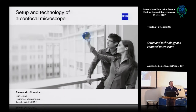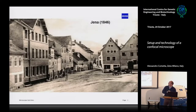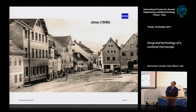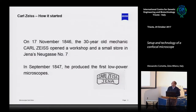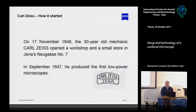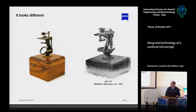I want to start with a historical image. This is a picture of Jena in 1846, when Carl Zeiss opened a small shop here, selling reagents and low-power microscopes. At that time, the microscope looked a little bit different than the ones you are using, and all the technology, if we can speak about technology, was here.